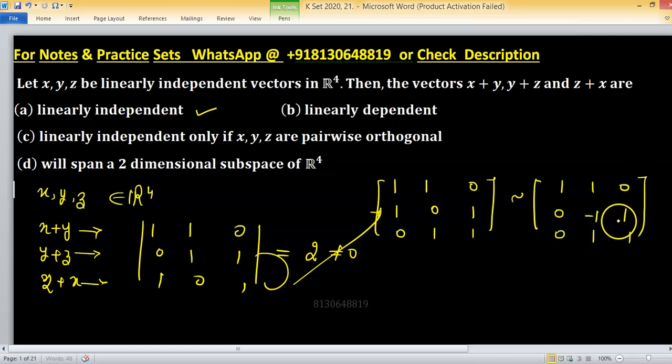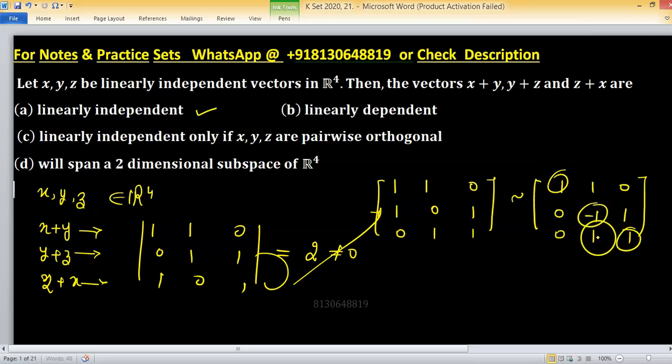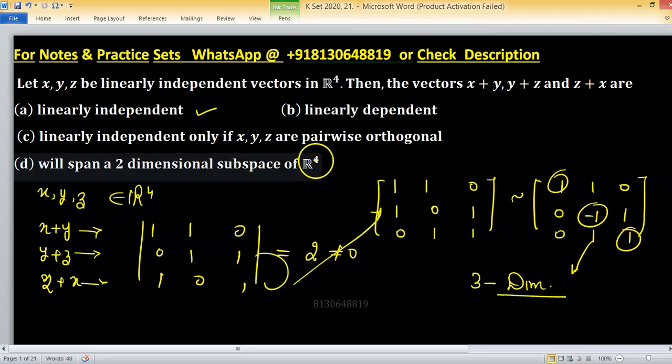So you can observe there are three pivots: 1, 2 and 3. This entry will go to 0. So there are three pivots, so this will span a three-dimensional space of R4.